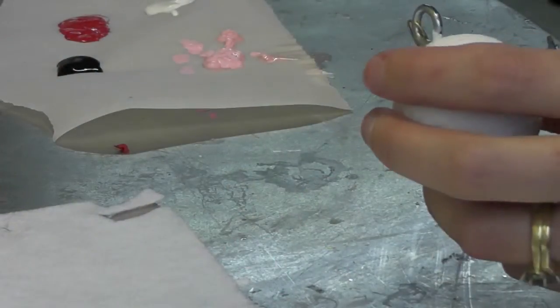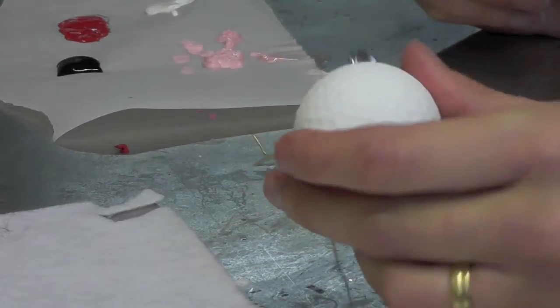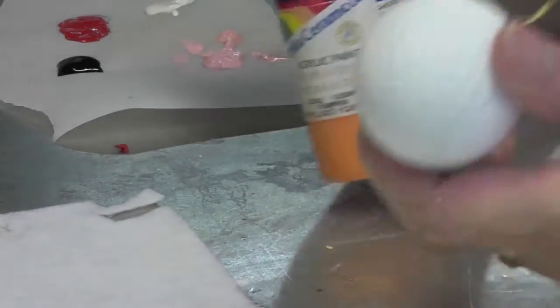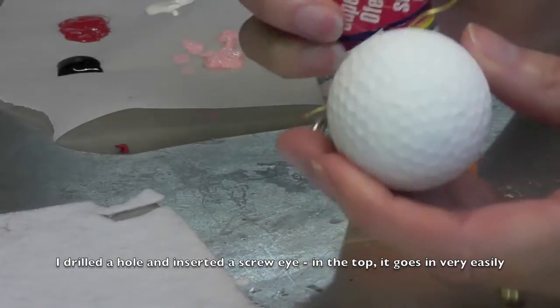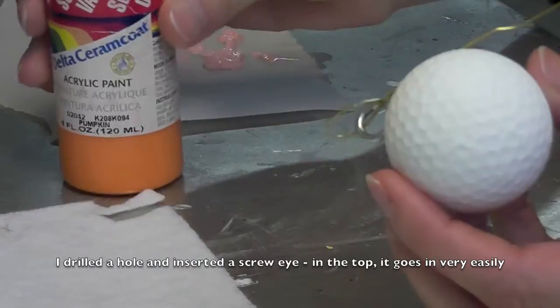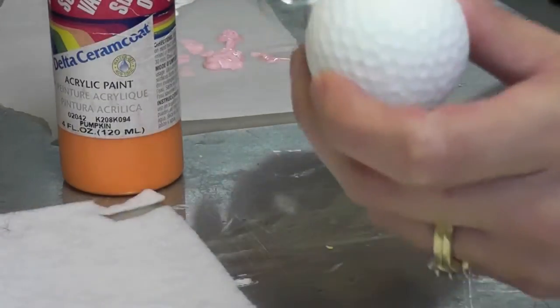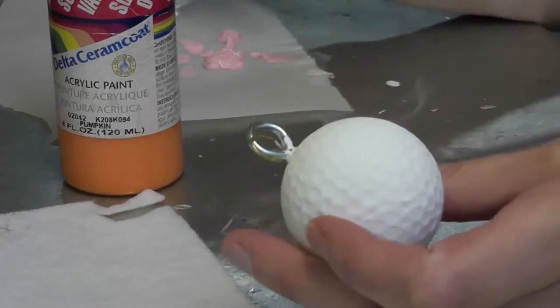Hi everyone, we are back with another Christmas craft and this time we're going to be doing a snowman made out of a golf ball. All I've done is painted it with acrylic paint, a couple coats. You're just going to need some acrylic paint in orange and in black. The orange obviously will be for the nose.